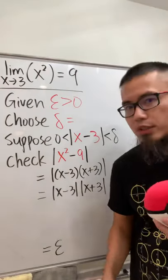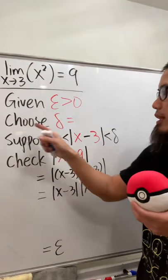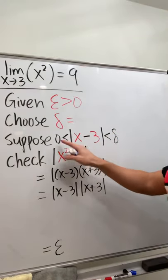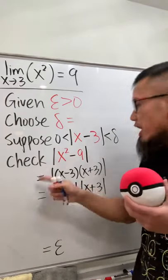To prove this statement with the epsilon-delta definition, you always want to say given epsilon is greater than 0, choose delta equals blank, and you say suppose the absolute value of this minus that is between 0 and delta, and you say check.